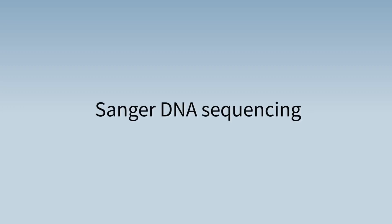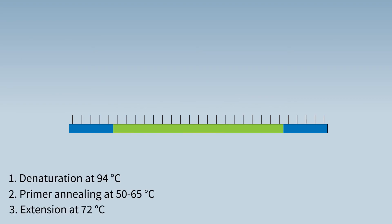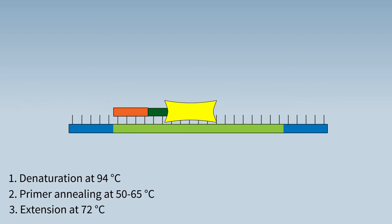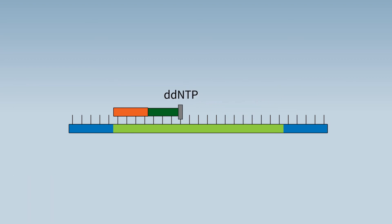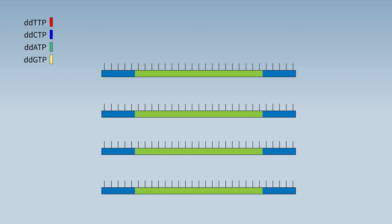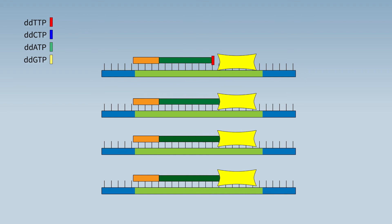The Sanger sequencing reaction is similar to conventional PCR — we have denaturation, annealing, and extension stages as before. However, during each cycle a dideoxynucleotide is incorporated randomly, terminating the extension stage at that point. This happens during each cycle of the Sanger sequencing reaction, and these dideoxynucleotides have a fluorescent tag that can be detected by the genetic analyzer. The result of this process is sequencing products of varying size, each with a fluorescently tagged nucleotide incorporated at the last base of the fragment.